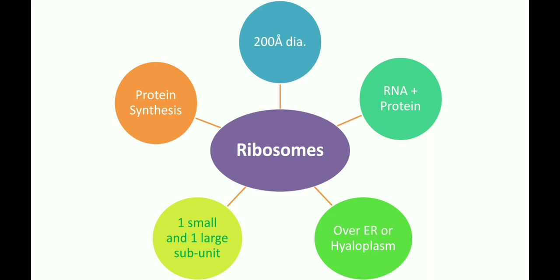A ribosome is often referred to as a ribonucleoprotein because it has both RNA and protein in its structure. Each ribosome is divided into two subunits — one is the smaller subunit and the other is the larger subunit.